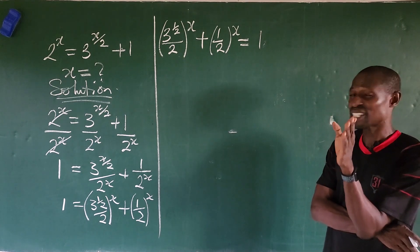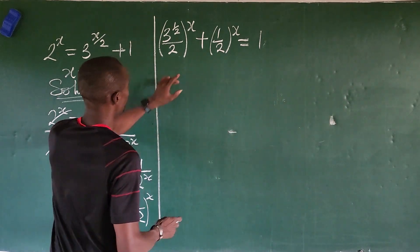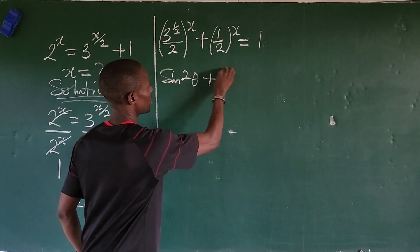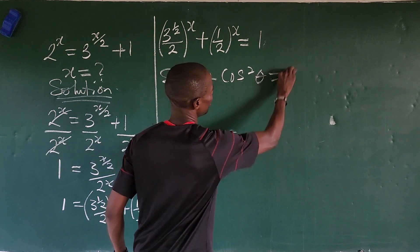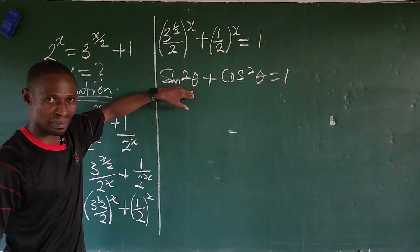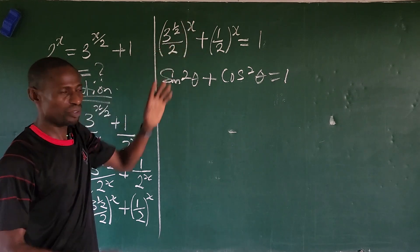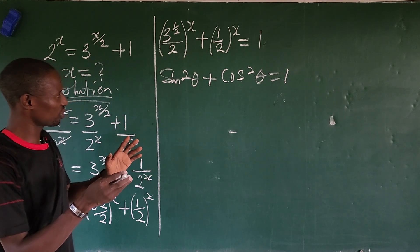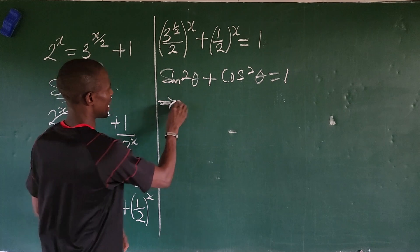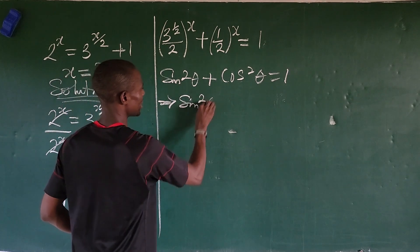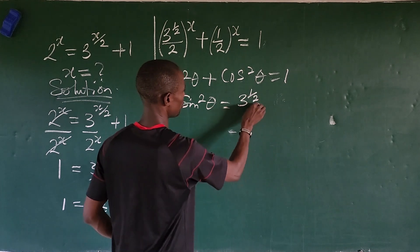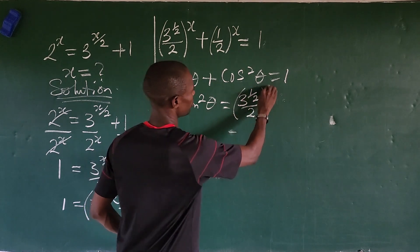Recall our trigonometric identity: sin²θ + cos²θ = 1. You discover that this expression here is a similitude of what we have. So drawing analogy between these two, it implies that sin²θ is equal to 3 to the power of 1 over 2, all over 2, raised to the power of x, and cos²θ is equal to 1 over 2 raised to the power of x.